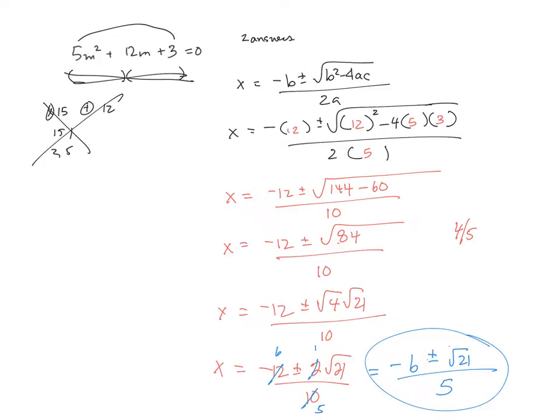Now, if they're asking for a decimal answer, then you'd go ahead and figure out what the square root of 21 is. And go minus 6 plus that over 5, and minus 6 minus that over 5. Making sure you put this stuff in brackets when you do it on your calculator. But this would be your exact answer.